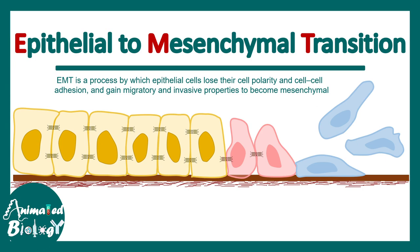In this video we'll talk about epithelial to mesenchymal transition (EMT), a process by which epithelial cells lose their polarity and cell-cell adhesion, and gain migratory and invasive properties to become mesenchymal. In this example, the yellow cells are epithelial, which transit into the blue mesenchymal cells. They dissociate from the basement membrane and can now migrate to many regions.